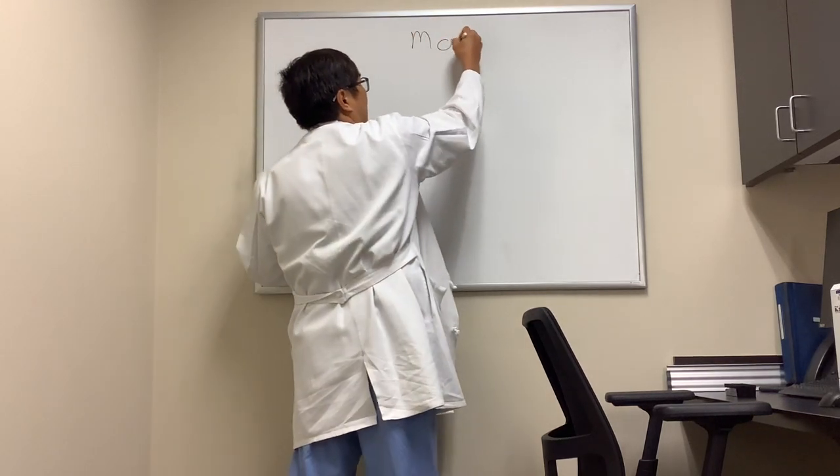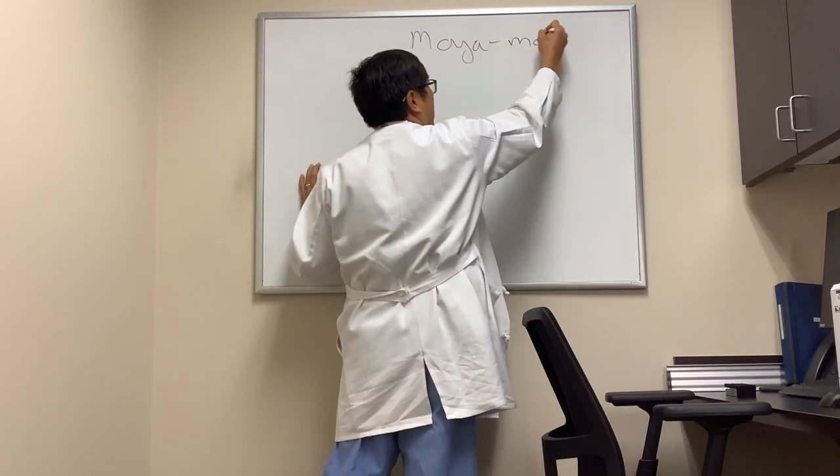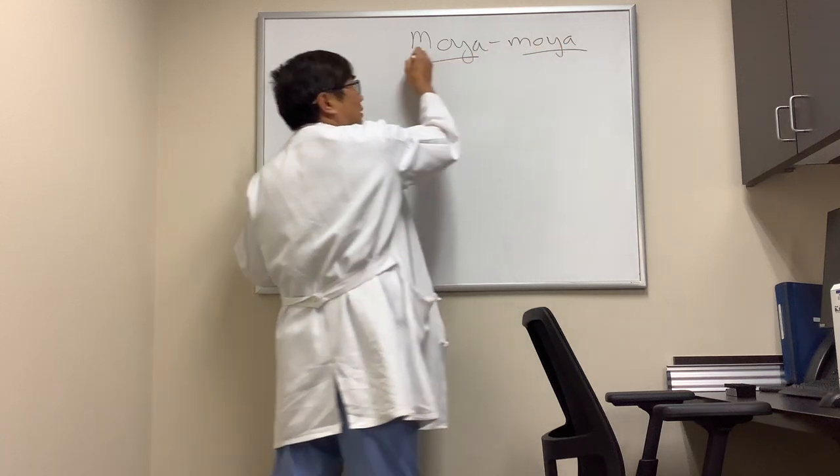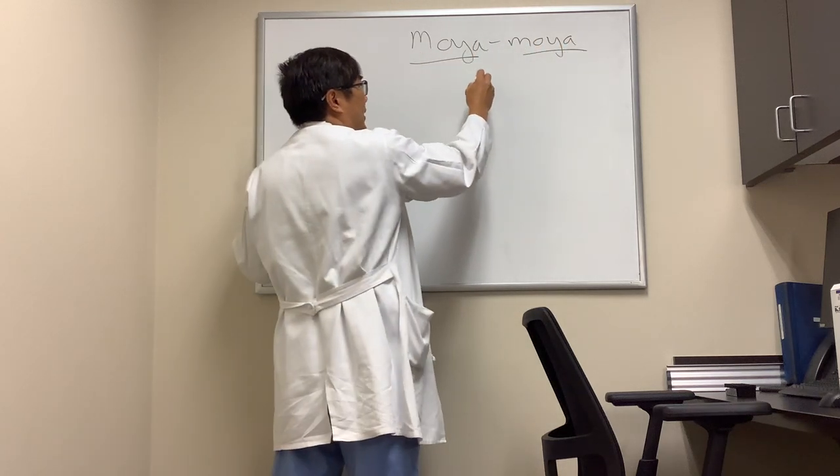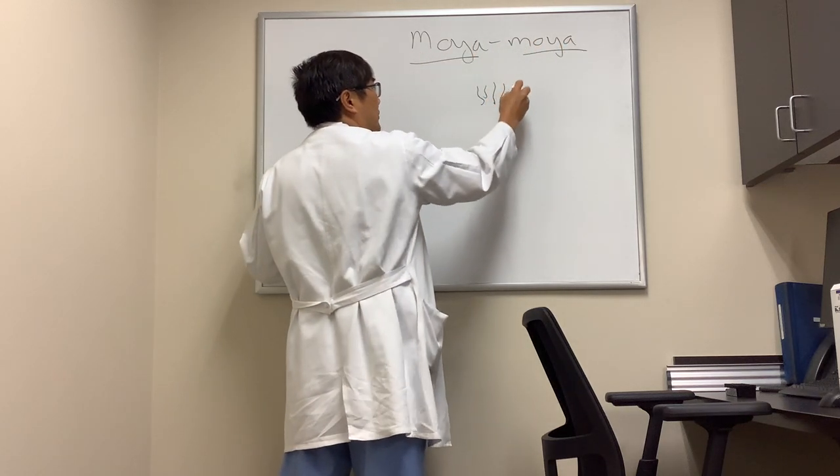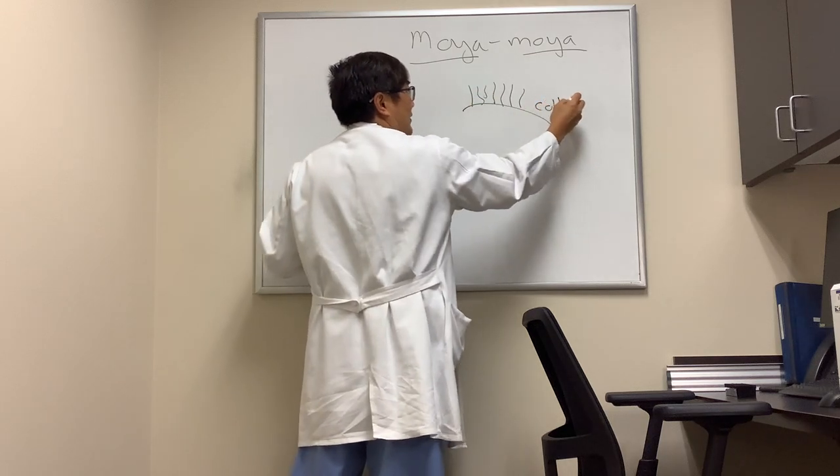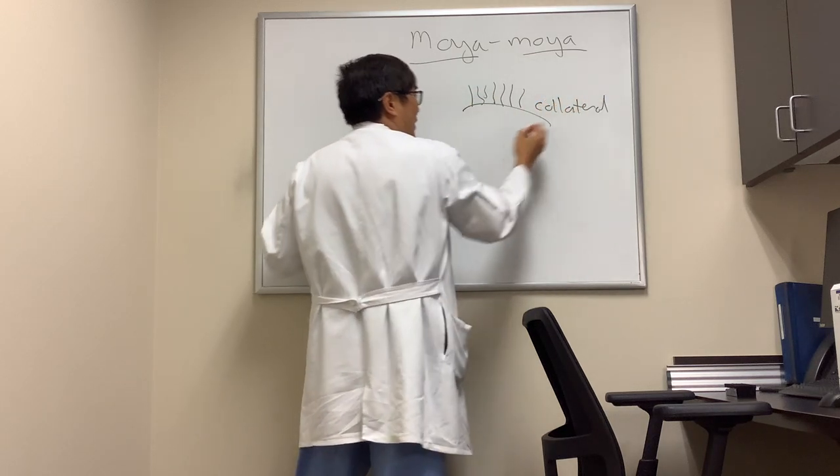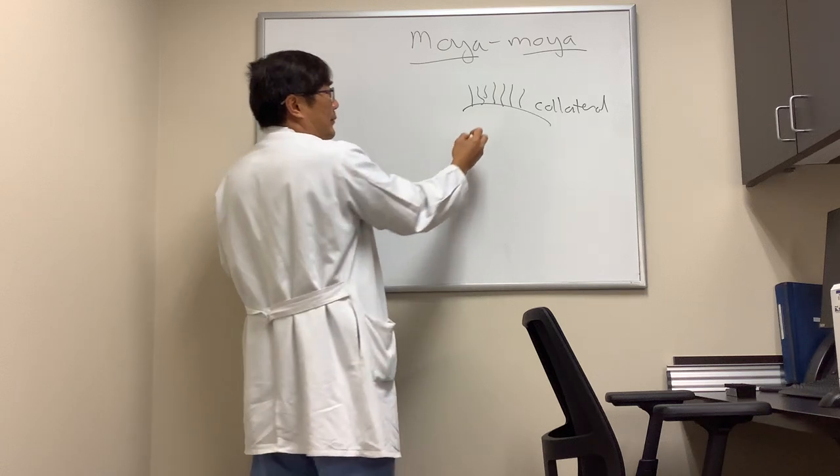Someone wanted to know about the neuro-ophthalmology of Moya Moya. Moya Moya is a Japanese word and it means puff of smoke, and the puff of smoke is actually from collateral vessels that are forming in response to the primary pathogenesis of Moya Moya.